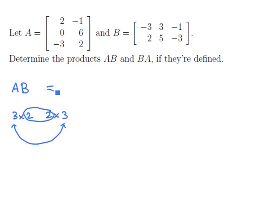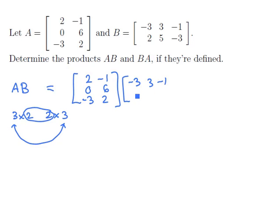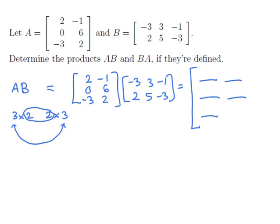Now let's work it out. The matrix A is 2, minus 1, 0, 6, minus 3, 2. The matrix B is minus 3, 3, minus 1, 2, 5, minus 3. Their product is going to be a 3 by 3 matrix, so let's leave space for 9 entries — 3 rows and 3 columns.